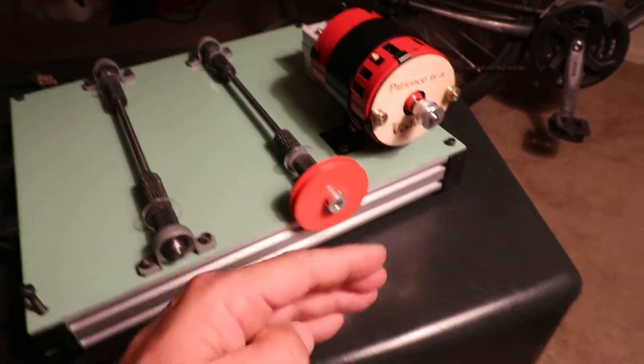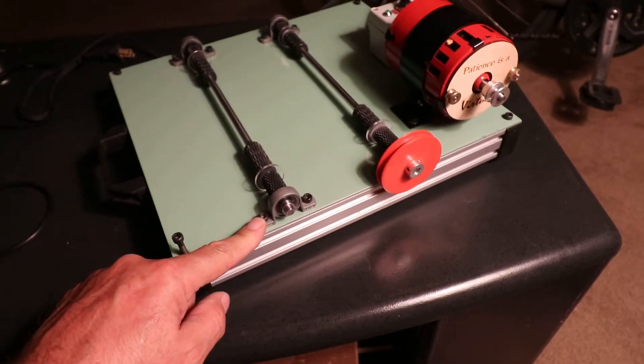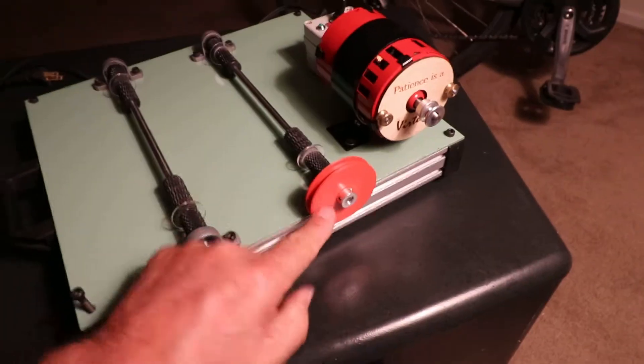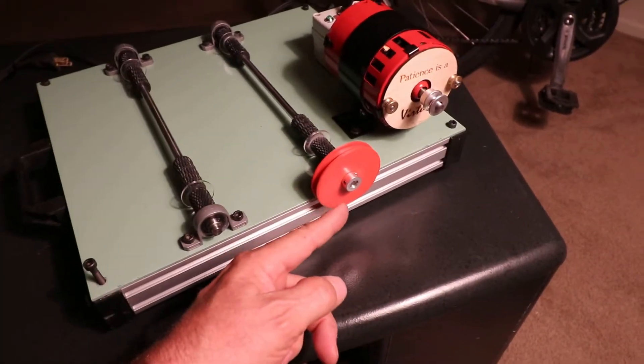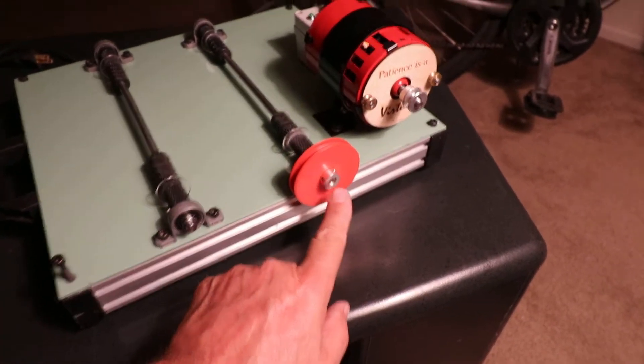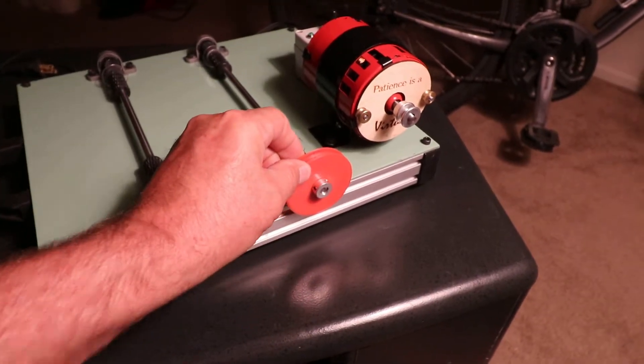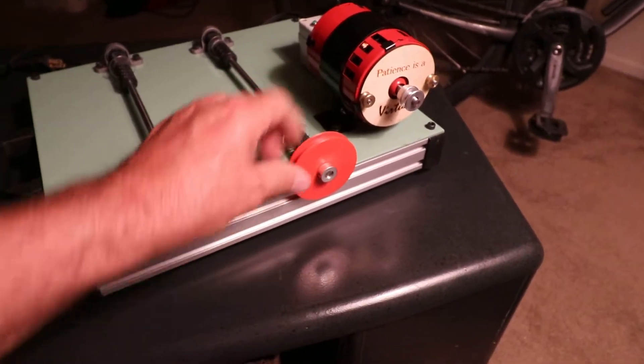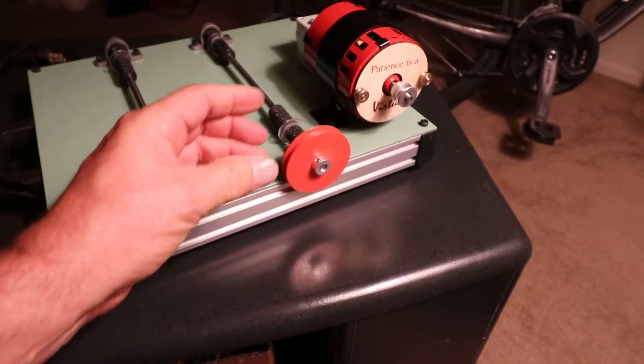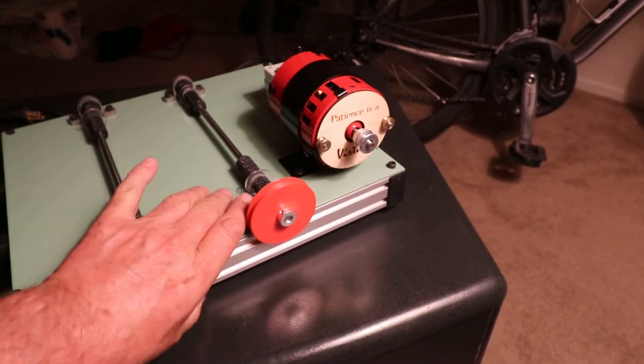He hung this out over the side because he didn't think of putting these elevated on two strips of wood to elevate it so that this would clear. He hangs it out over the side. The only thing holding this is this bushing, which the shaft isn't long enough for. To hold this in position, he jammed it up against there, even though this turns. What can I say?